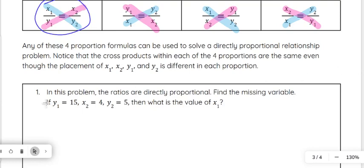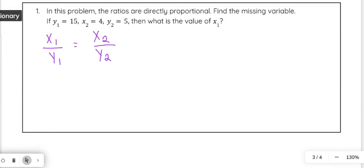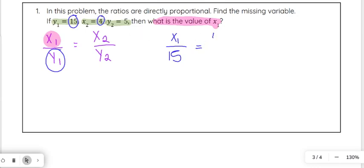So let's go ahead and look at this first example. I'm going to copy down the formula version that I prefer or that I use just out of habit. But again, you can use any of the four. So let's go ahead and set this up. They tell us in this problem, the ratios are directly proportional. Find the missing variable, which in this case you can see in your next line, what is the value of x1. So that's going to be the unknown here. But they do tell us y1, x2, and y2. So we can go ahead and plug that in. So first things first, we don't know x1. y1 is going to be 15. So that's going to go right here. x2 is going to be our next one, which is 4. And then y2 is our bottom number, which is 5.